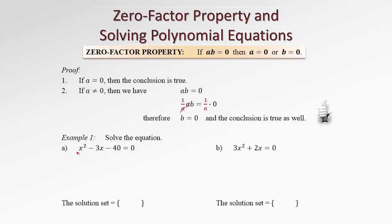Let's see. Say we want to solve this equation. Since we have a polynomial on one side and zero on the other side, the idea is to factor this polynomial into two linear factors. We start with x and x in each bracket. We are looking for two numbers that multiply to 40 and differ by 3 — that will be 8 and 5. The larger number takes the middle sign, so it's negative 8 and positive 5.